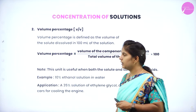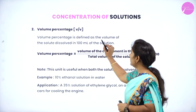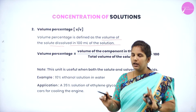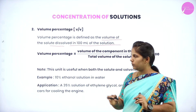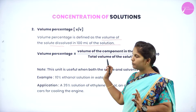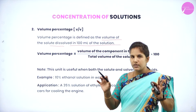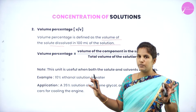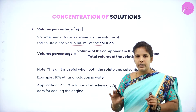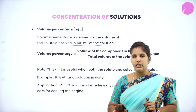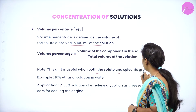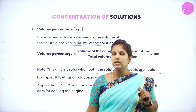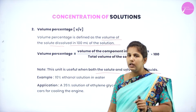Next is volume percentage. It can be defined as the volume of the solute dissolved in 100 ml of solution. Here, instead of mass, you use volume: volume of the solute divided by total volume of the solution into 100. This unit is useful when a solute and solvent are both in the liquid state.